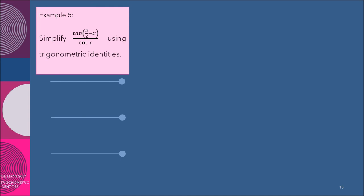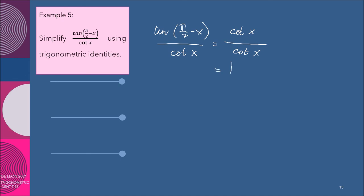Example 5: Simplify the expression tangent of pi over 2 minus x, all over cotangent x, using trigonometric identities. We know that tangent of pi over 2 minus x is equivalent to cotangent x by the co-function identity. So we have cotangent x over cotangent x, which equals 1.